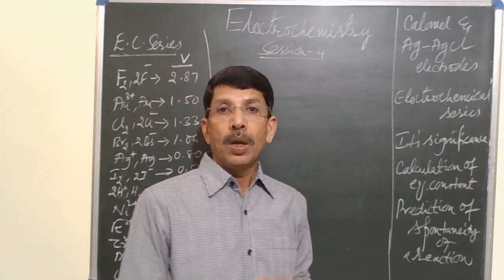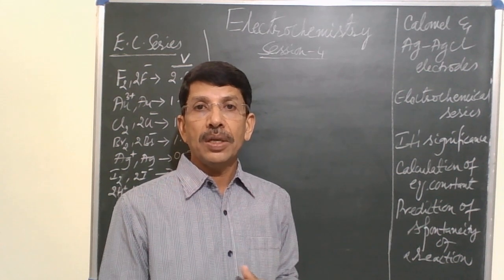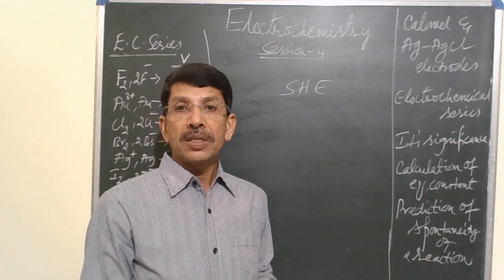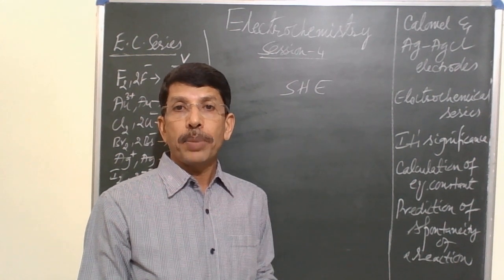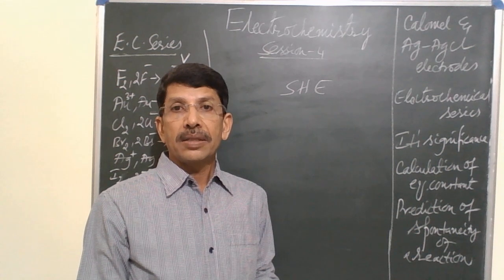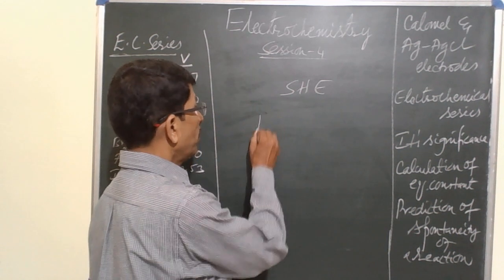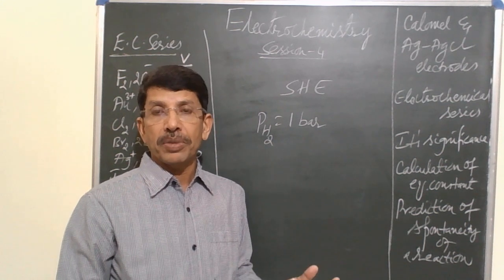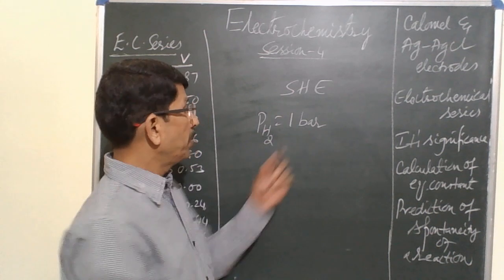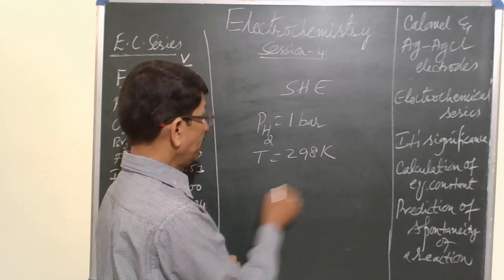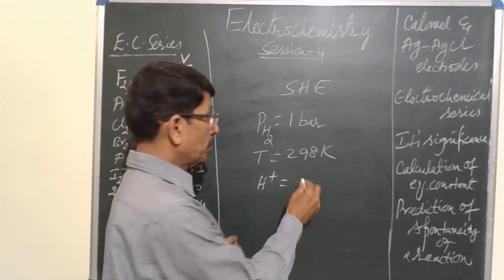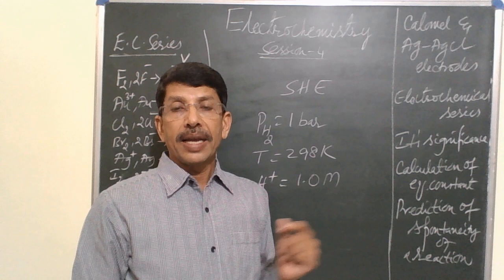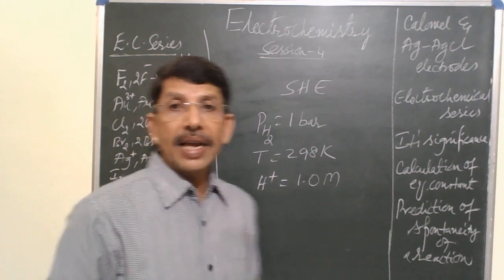In the last session — the third session — at the end I discussed the standard hydrogen gas electrode, or simply the standard hydrogen electrode, which is considered a primary reference electrode. We learned that for constructing the standard hydrogen electrode we have to maintain the pressure of hydrogen gas at one bar. In earlier books they considered one atmospheric pressure; now it is considered as one bar.